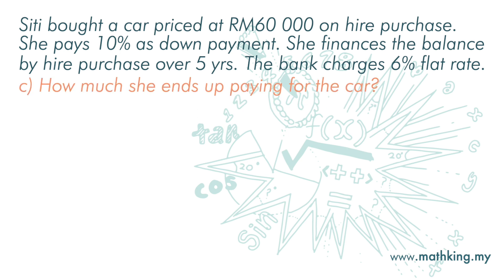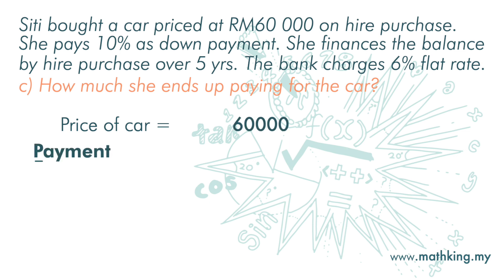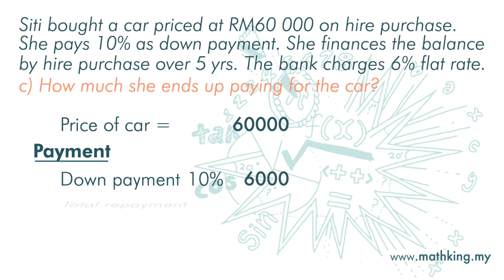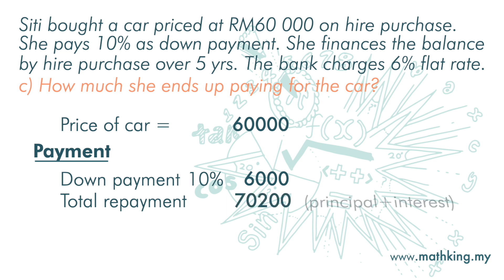C: How much does she end up paying for the car? The price of the car is 60,000. What she pays for down payment is 10%, which is 6,000. The total amount she is to pay for the loan plus interest is 70,200 — that is the repayment amount. So in total, she pays 76,200 ringgit for the car.